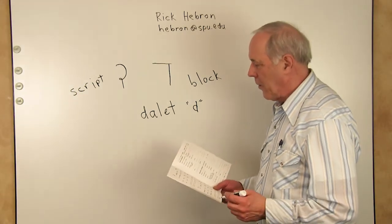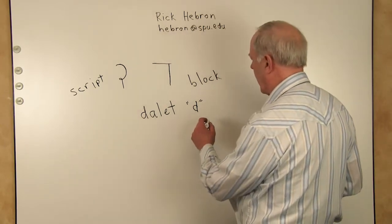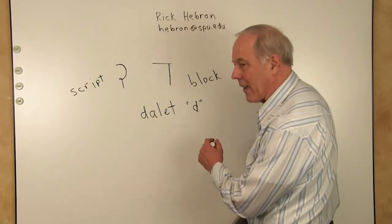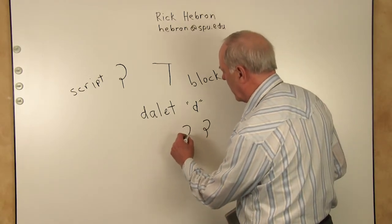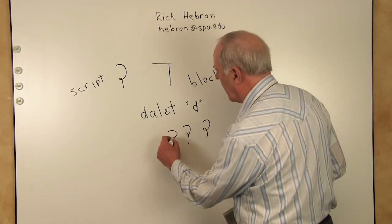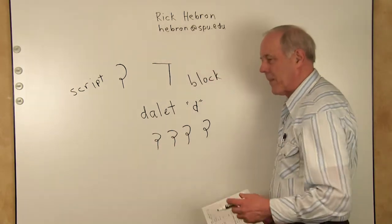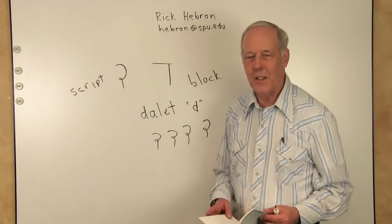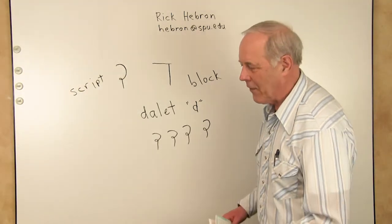And we'll learn vowel two. First of all, let's write a Dalet or two. We're going to write Dalet across the page a little bit. D, D, D, D. So practice the Dalet, just like you did in your first grade class when you were learning the English alphabet.